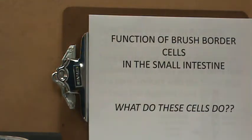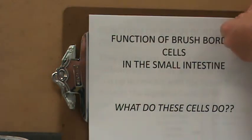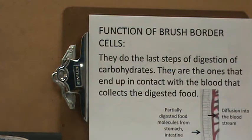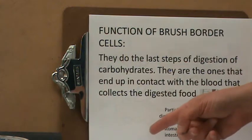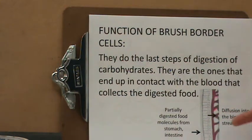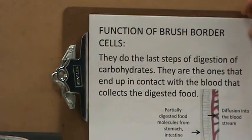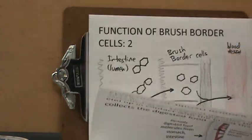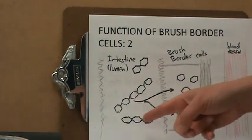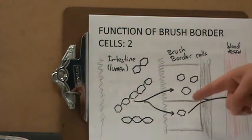The function of the brush border cells in the small intestine: they perform the last steps of digestion of carbohydrates and proteins, and they are in contact with the blood that collects the digested food. Partially digested food molecules from the stomach and intestine enter the brush border cells, break down further, and then diffuse into the bloodstream. For example, small fragments of carbohydrates are broken down to individual glucose and diffuse to the blood vessel.